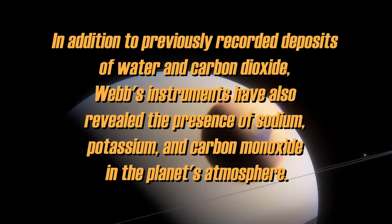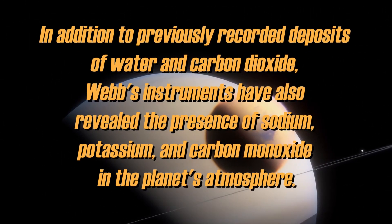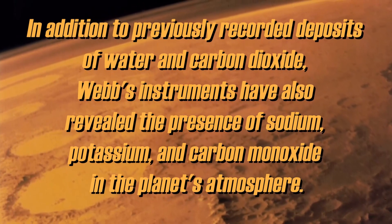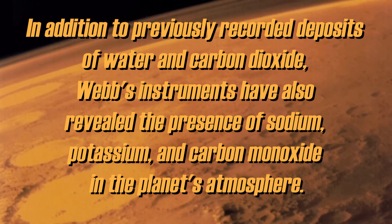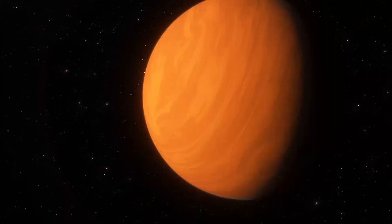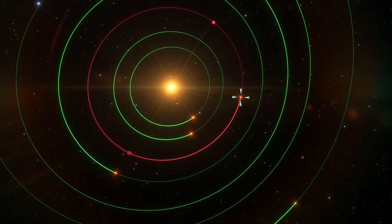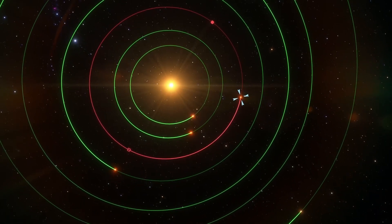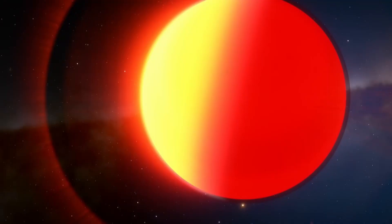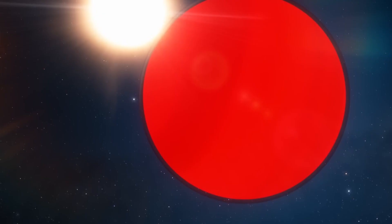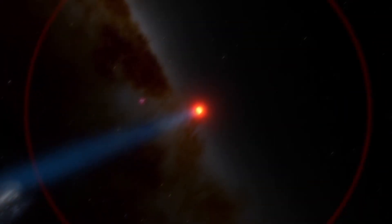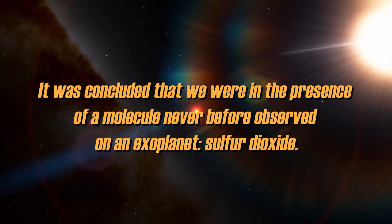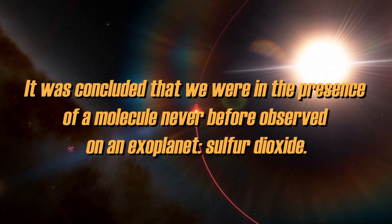In addition to previously recorded deposits of water and carbon dioxide, Webb's instruments have also revealed the presence of sodium, potassium, and carbon monoxide in the planet's atmosphere. At the same time, it has been discovered that the atmosphere of WASP-39b does not appear to contain methane, which is in significant contrast to some of the gas giants in our own solar system. These acquired spectra offer particularly interesting information. The experts discovered an absorption line that initially cannot be identified in a known context. However, by comparing it with models, it was concluded that we were in the presence of a molecule never before observed on an exoplanet: sulfur dioxide.